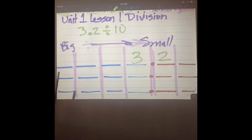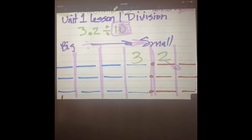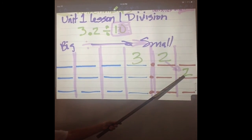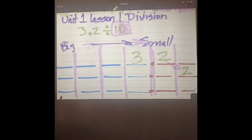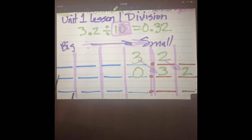How many places are we going to shift it? One time. Why? Because there's one zero in ten. So we're going to shift it to the right one time. We shift the two, and then we shift the three. So now we have two hundredths and three tenths—or 0.32. We have two pennies.